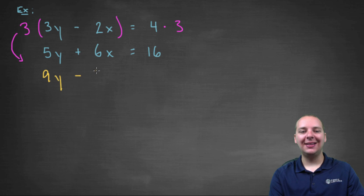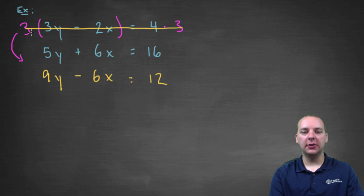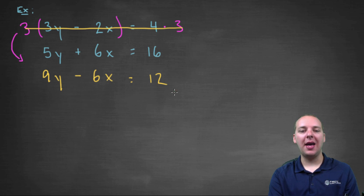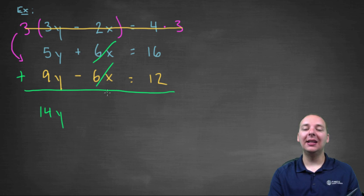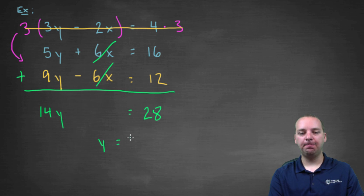These are our two new equations. Notice the x coefficients: we have exactly what we wanted — same coefficient but with opposite sign. So the next step is to add these two equations together: add the y's, add the x's, and add the constants. Adding the y's gives fourteen y. The x's are eliminated — this is why it's also called the elimination method — and sixteen plus twelve makes twenty-eight. That's a much simpler equation with one variable. Dividing both sides by fourteen gives y equals two.